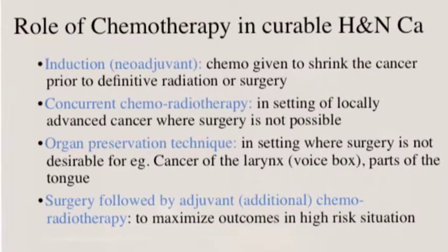Targeted therapy is therapy that is directed specifically against a specific target that we are able to identify in the cancer cell. The role of chemotherapy in head and neck cancer has gone through a lot of maturity. There are four different philosophies for which you can use chemotherapy. The first is called induction chemotherapy or neoadjuvant chemotherapy — this is basically when chemotherapy is given in order to shrink the cancer down prior to proceeding with a definitive radiation, definitive chemoradiation, or definitive surgery.